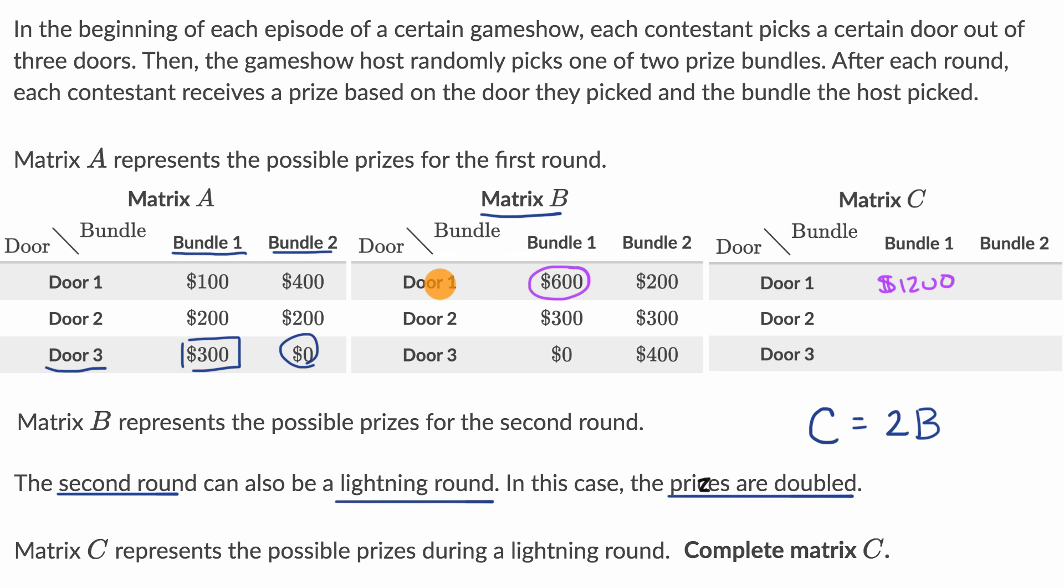If the contestant picks door one and the host picks bundle one, instead of $600, it's going to be $1,200. Instead of $200, it's going to be $400. I'm multiplying each of these entries by two to get the corresponding entry in matrix C.